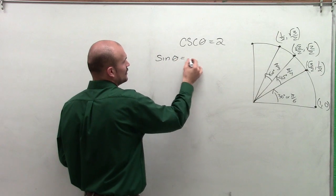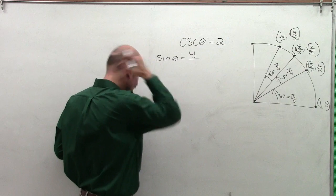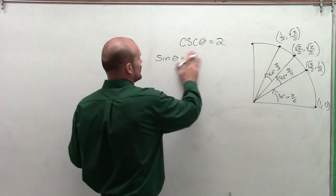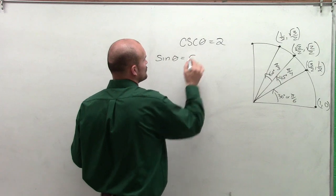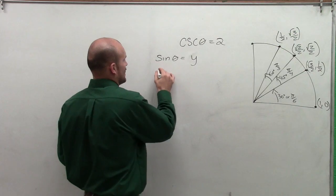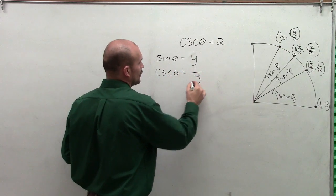And remember, sine of theta represents the y over your r. Well, in this case, our r is going to be 1. So therefore, our sine just represents our y-coordinate. So the cosecant in that case, the cosecant of theta then is going to be 1 over y.